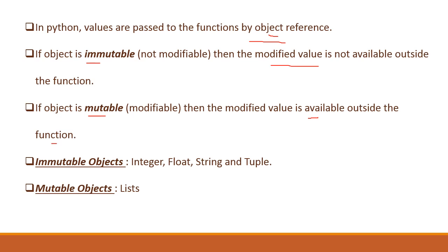Immutable objects like integer, float, string, and tuple. Mutable objects like list.